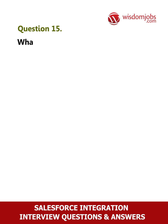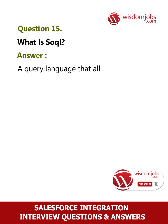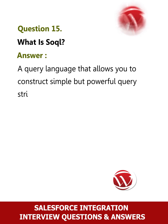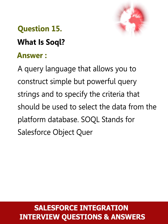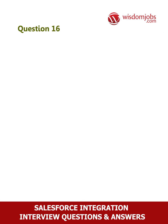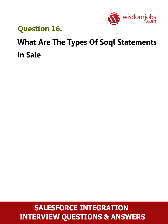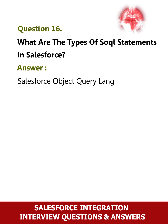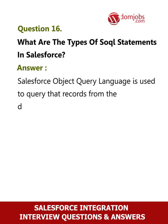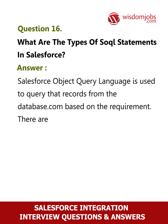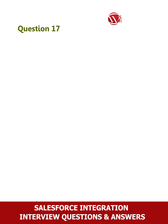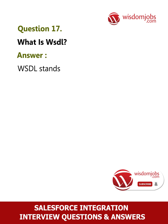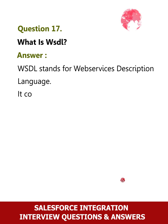Question 15: What is SOQL? Answer: SOQL is a query language that allows you to construct simple but powerful query strings and to specify the criteria used to select data from the platform database. SOQL stands for Salesforce Object Query Language. Question 16: What are the types of SOQL statements in Salesforce? Answer: There are two types of SOQL statements: Static SOQL and Dynamic SOQL.